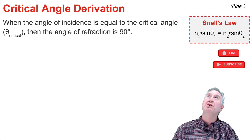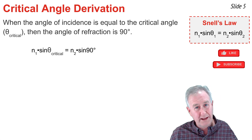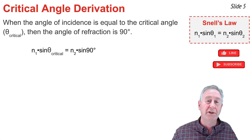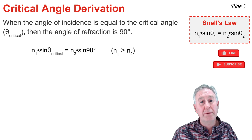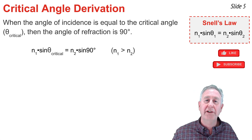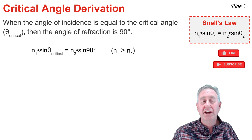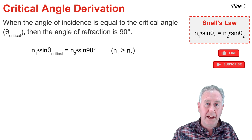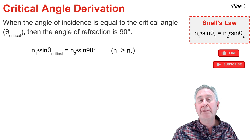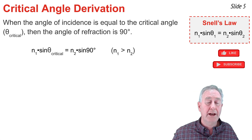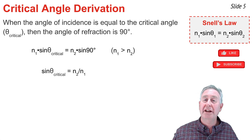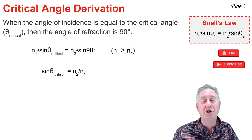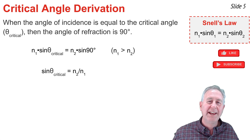So I'm going to substitute 90 degrees for the angle of refraction and the critical angle for the angle of incidence in Snell's law. N1 must be greater than N2 for light traveling from the more dense to the less dense material. To isolate the critical angle, I divide both sides by N1. Noting that the sine of 90 degrees is 1, the equation becomes: sine of the critical angle equals N2 divided by N1.